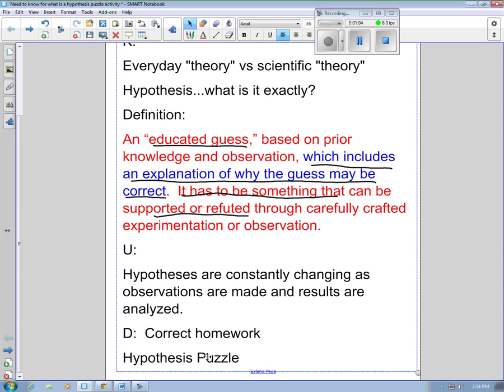We corrected homework and then we took a hypothesis puzzle. And that's based on an activity that if you have your textbook with you, you can see is on the bottom of page 140 of your textbook. It's called Puzzling Over Evidence.